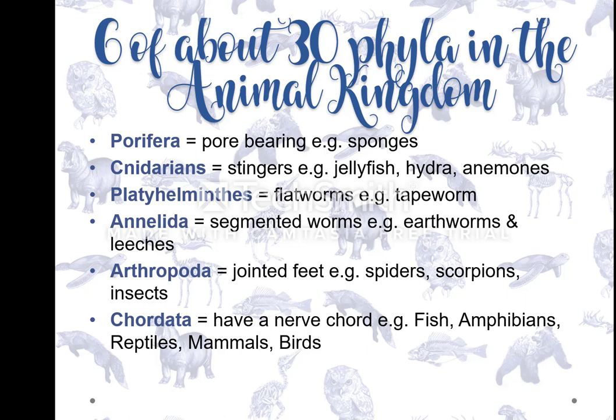We're going to learn about six phyla only, which means any test question can only ask you about these six. We've spoken before about a cladogram or phylogenetic tree, and I'm going to teach you that again. A phylogenetic tree might not look exactly like the one you learn because it depends on which phyla are included. We are only learning six, and you only need to know the characteristics of those six. You will never be asked about a phylum you haven't learned.